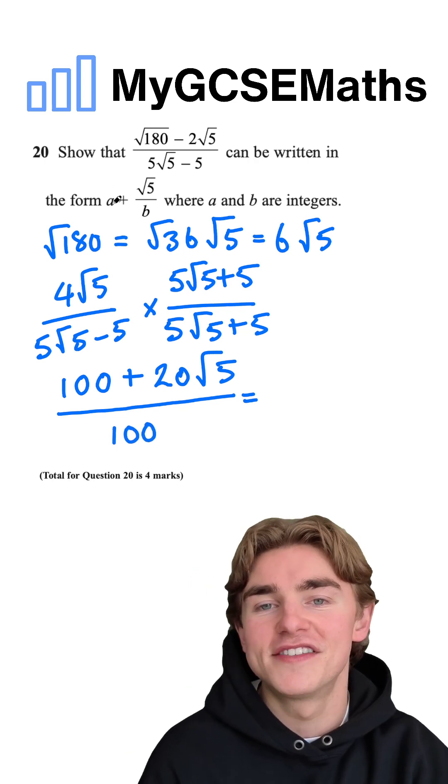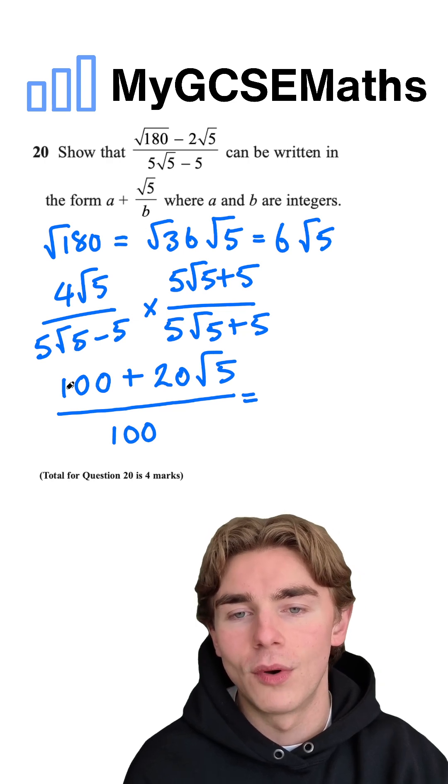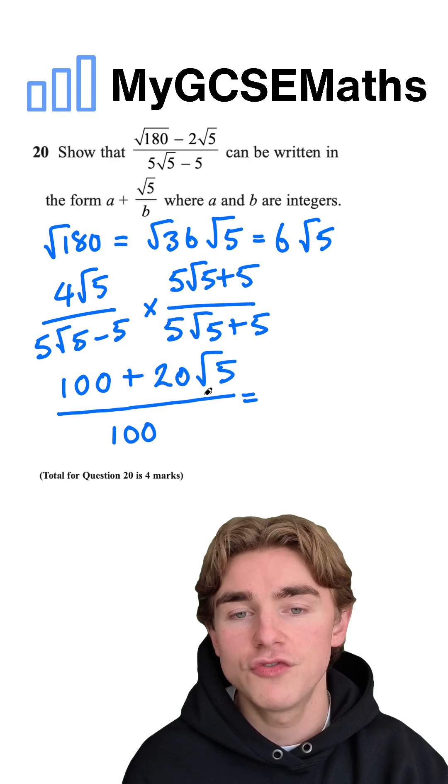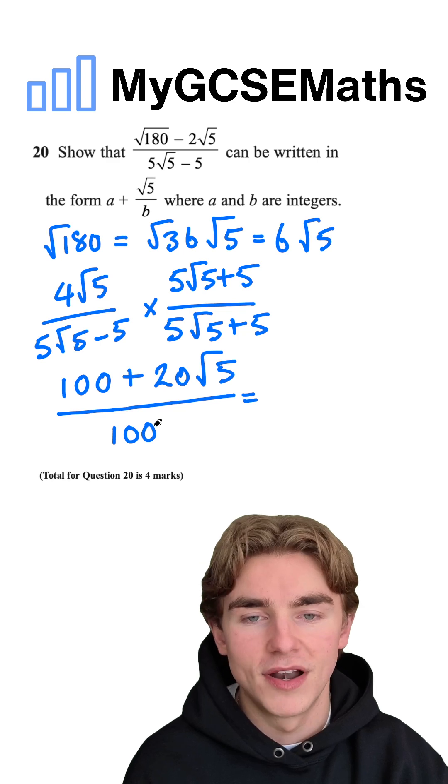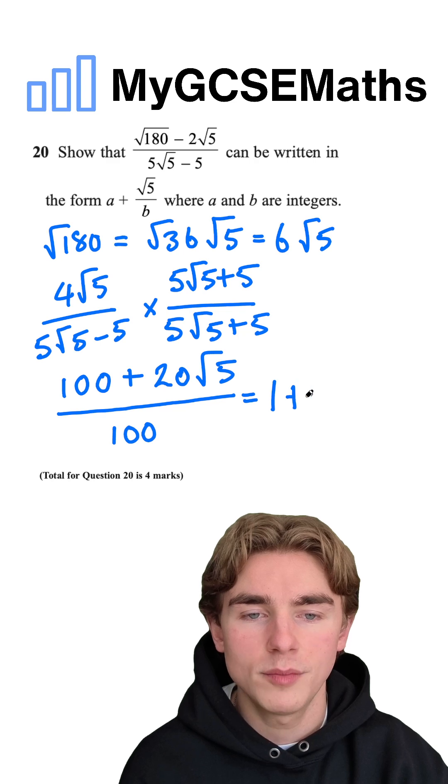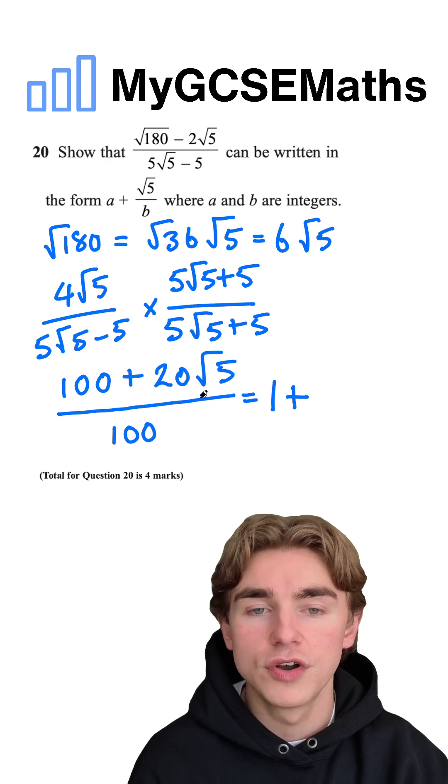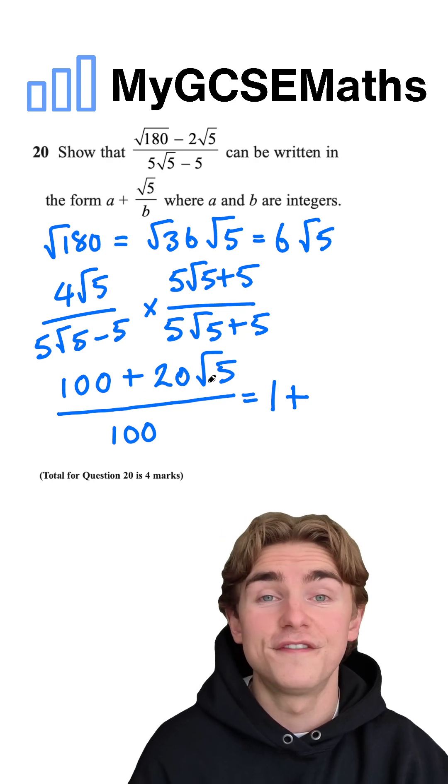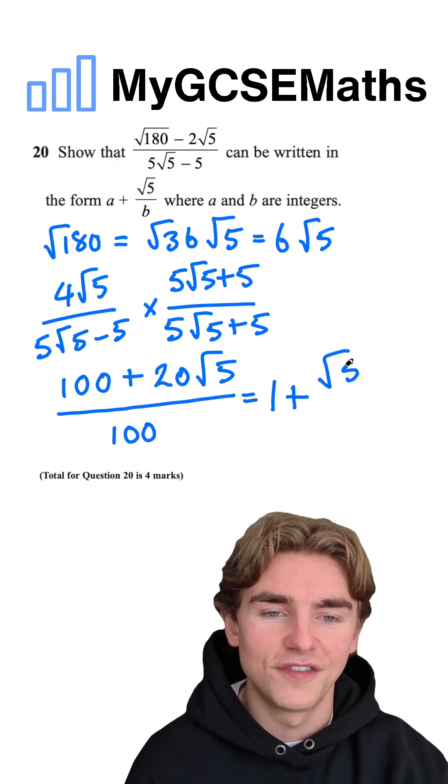what can we do? Well, we need to write this in the form A plus root 5 over B. So we're going to do our 100 divided by our 100 and our 20 root 5 divided by 100 separately. 100 divided by 100 is just 1, so we can write this as 1 plus 20 root 5 divided by 100. Well, we're going to have 20 over 100 root 5, which is 1 over 5 root 5, which is the same thing as root 5 over 5.